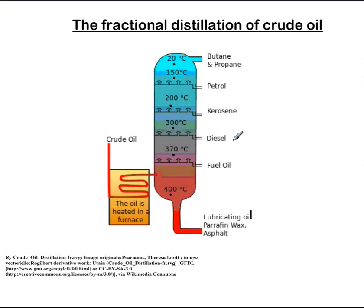Going further up, kerosene is formed and is used to heat houses or in kerosene lamps. Kerosene has a carbon chain between 12 and 15 carbons. Higher up still we have petrol, which is a mixture of hydrocarbons with carbon chains between five and eight carbons in the chain — that is the petrol that we use.